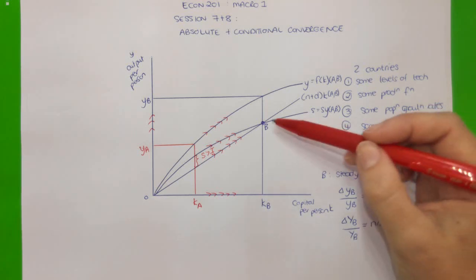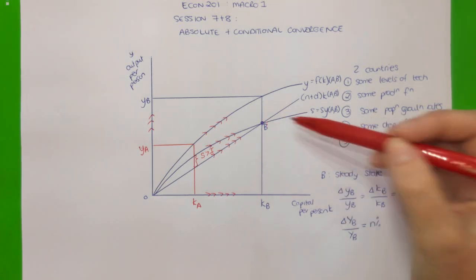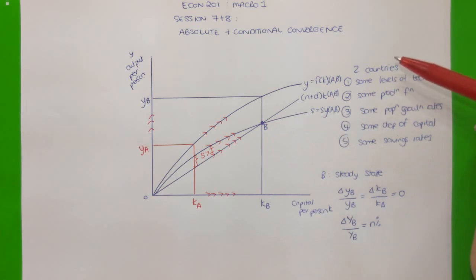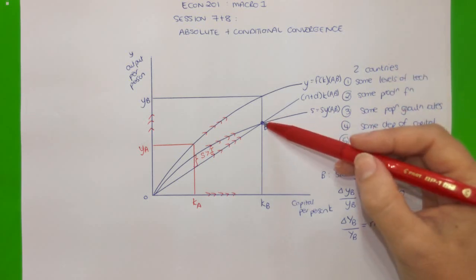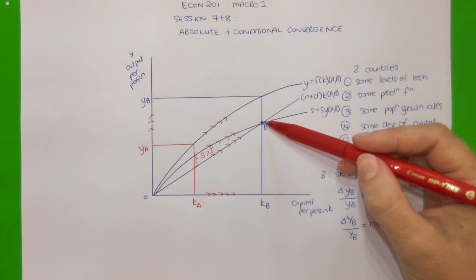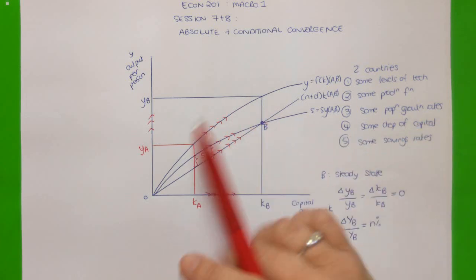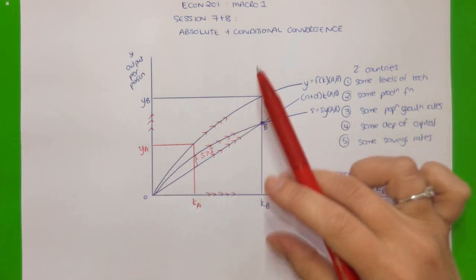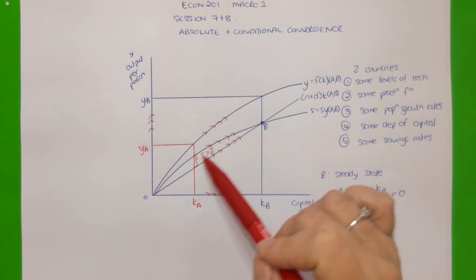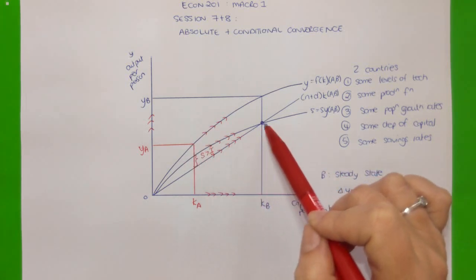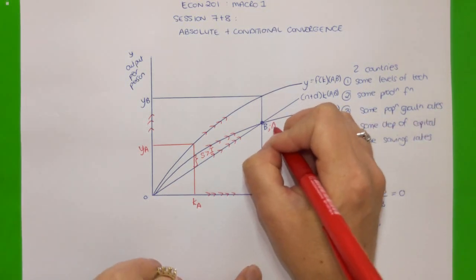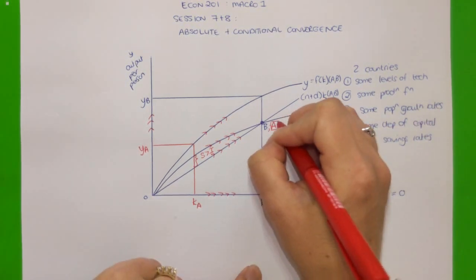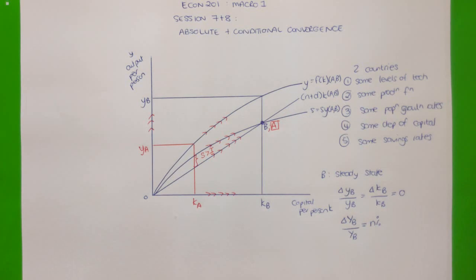Because in country B we haven't said anything about further changes to technology, population growth rate, depreciation, or the savings rate, country B remains at its steady state while country A is able to improve its capital-to-labor ratios and output per person, so that eventually country A can catch up to country B and will be at the same steady state equilibrium.